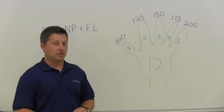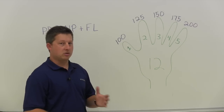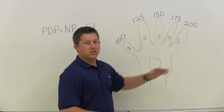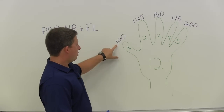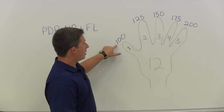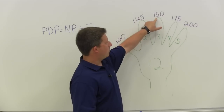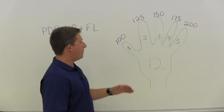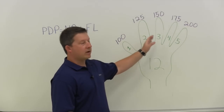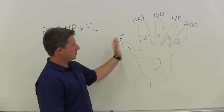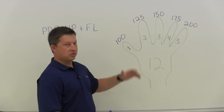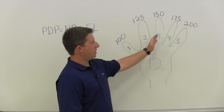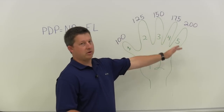Those are just multipliers that you're going to use to determine the friction loss. The GPM settings are listed at the top of the fingers. Starting with the thumb you have 100, 125, 150, 175, and 200. Commonly this is going to be 95, 125, 150, 200, but just to simplify it — this is a fire ground method, it doesn't have to be exact — we'll use 100, 125, 150, 175, 200.